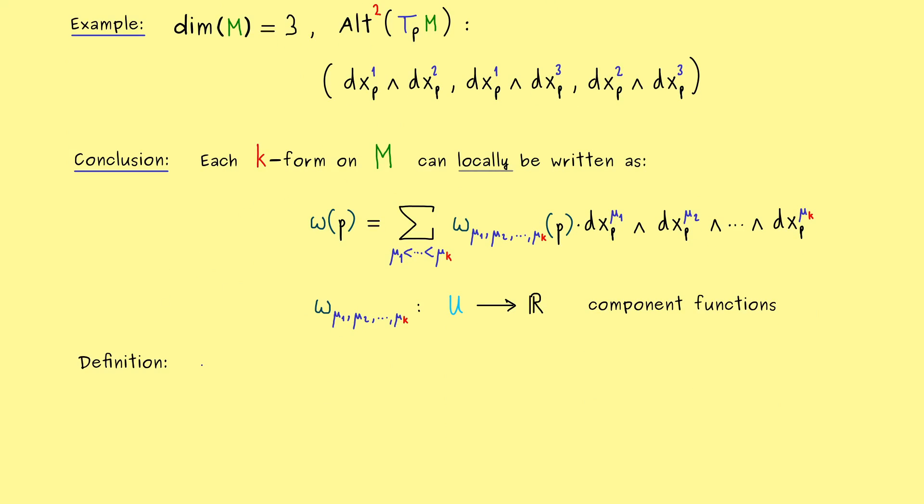And exactly this we can finally use to make the definition of a differential form. Now, the first thing is very quick. If all the component functions here are differentiable at the point p, then we simply say that the k-form on M omega is differentiable at p. So you see, this is a new notion. Now, a k-form on M can be also differentiable. Moreover, by the definition of a smooth manifold, as always, you should see, it does not matter which chart we choose here. More precisely, if we have this differentiability for one chart around p, we have it for any chart around p.